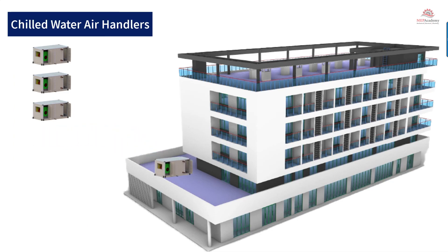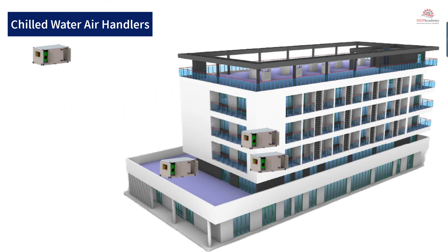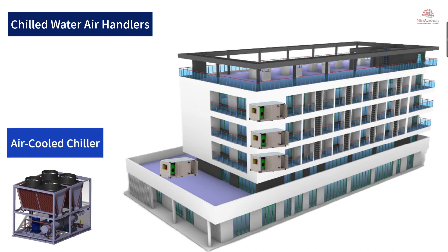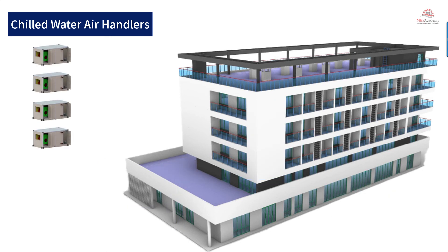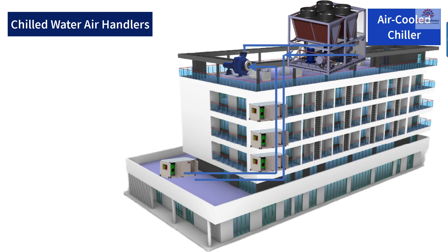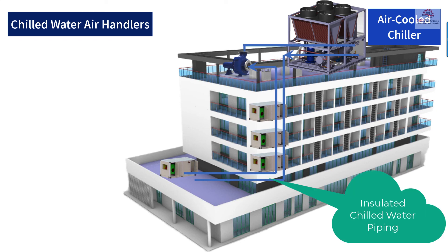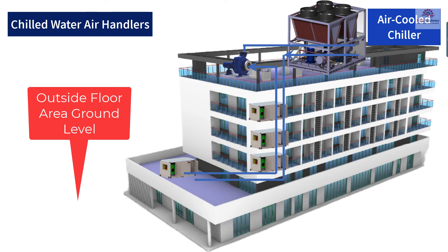For installation, each floor gets a chilled water air handler — there can be one or more per floor, or several placed on a roof. Air handlers can be indoors or outdoors with weatherproof models available. An air-cooled chiller must be located outdoors — on the ground floor, a low roof, or the upper roof — and chilled water must be piped from it to each air handler. Placing it on the roof keeps it out of sight if ground space is limited.